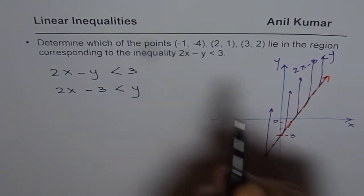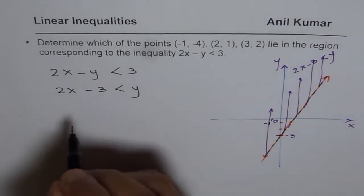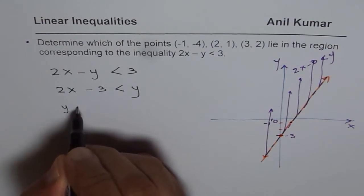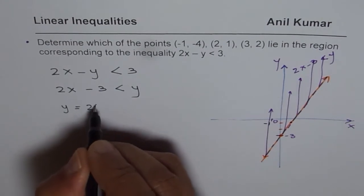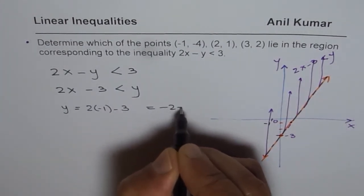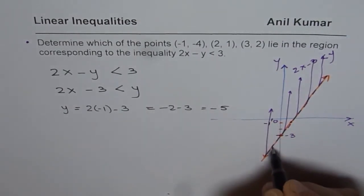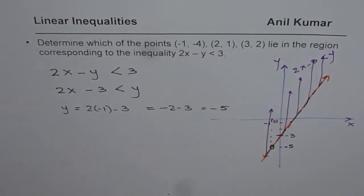Let us look into the position of these points. If I say (-1, -4), so let us say this is -1, then let me consider now the equation, what is y equals at x = -1? So, if I write 2 times -1 minus 3, I get -2 - 3, which is -5. So, at x = -1, the y value here on the line is -5.